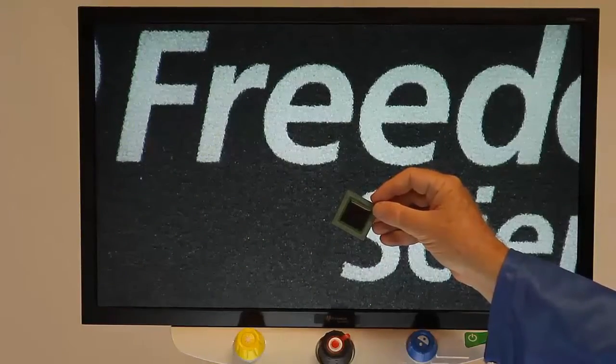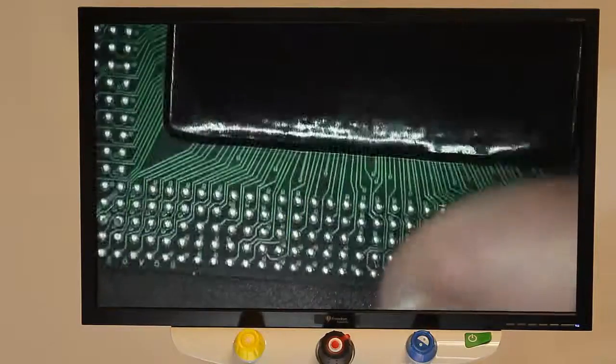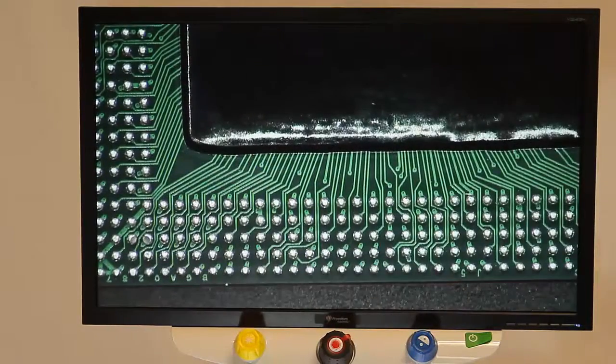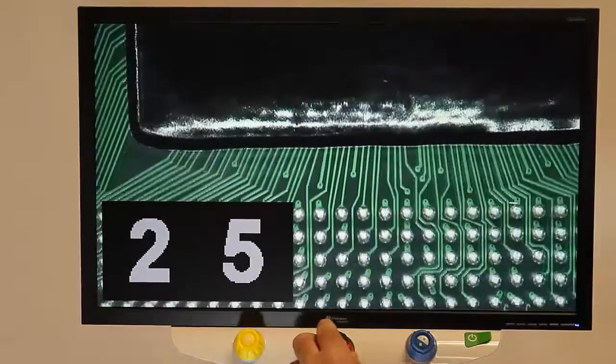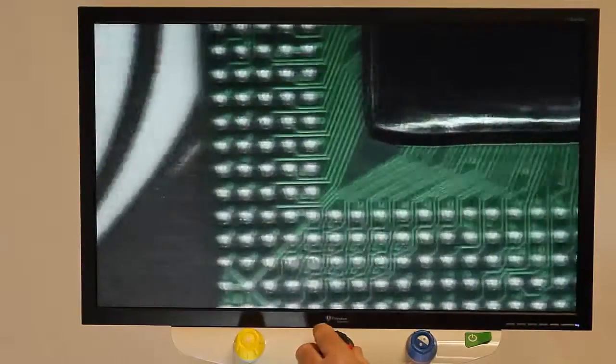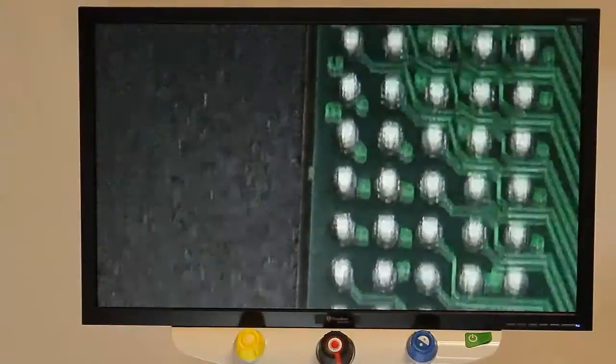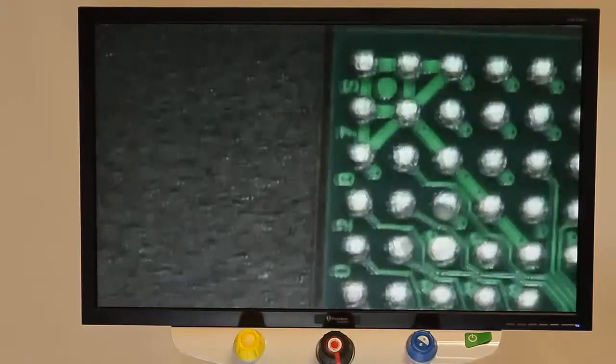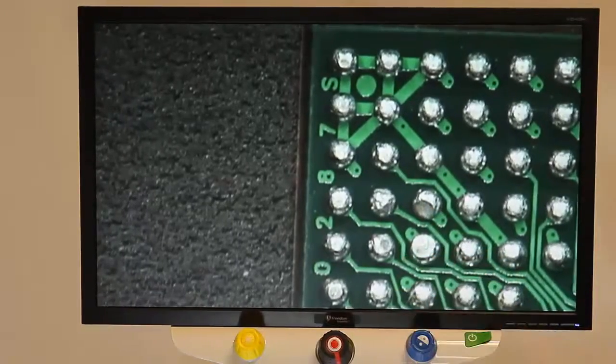The adjustable multi-directional lighting and manual focus allow inspectors to examine small, three-dimensional surfaces, like ball grid arrays, to rapidly identify defects.